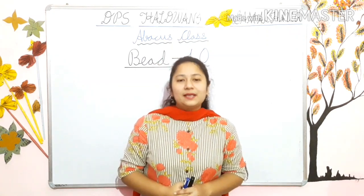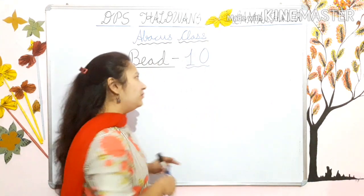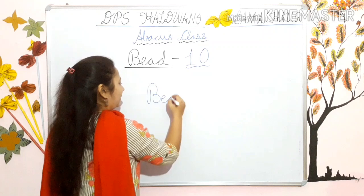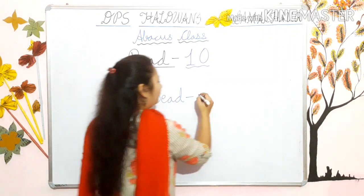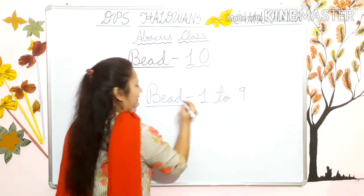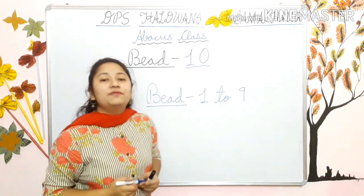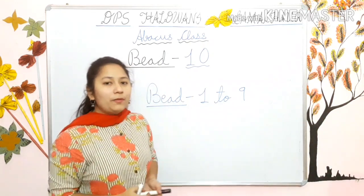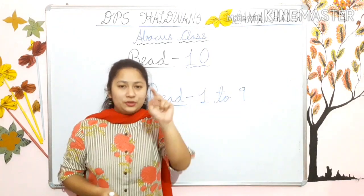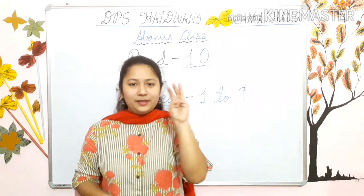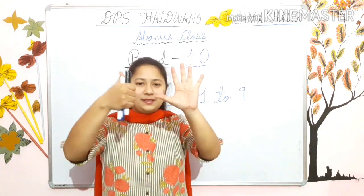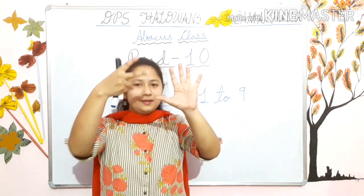So kids, in our previous videos we have discussed beads from 1 to 9. Yes kids, I have told you how to draw beads from 1 to 9 — means 1, 2, 3, 4, 5, 6, 7, 8, 9.